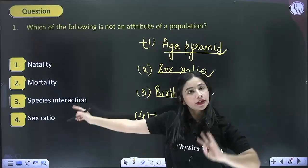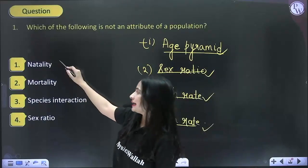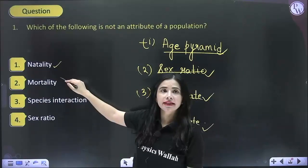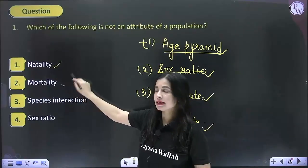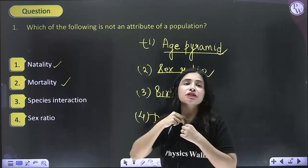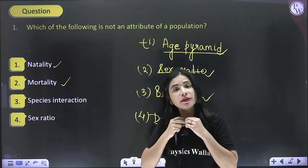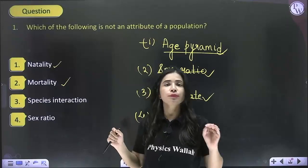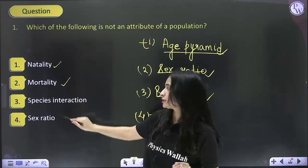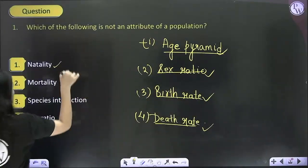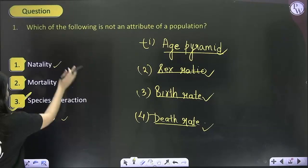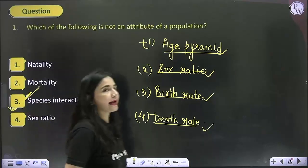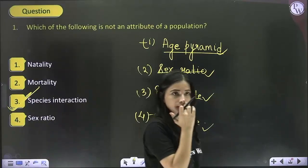According to the question: natality means birth rate — correct. Mortality means death rate — correct. Species interaction is actually population interaction, but it is not an attribute of a population. Sex ratio is an attribute. So the answer becomes option 3. I hope you have all understood this first question.